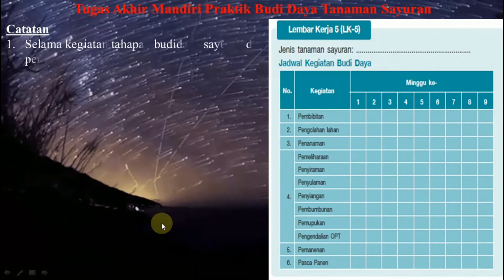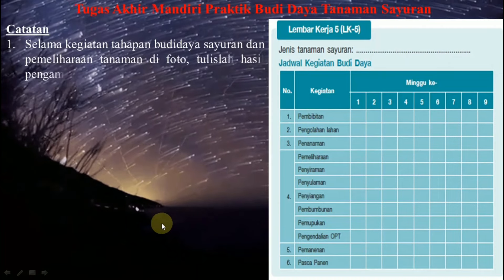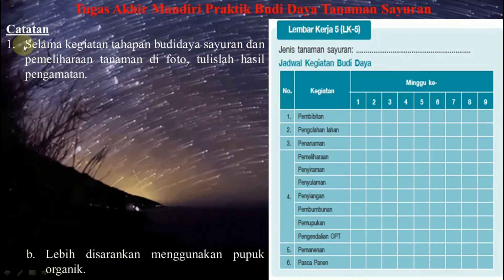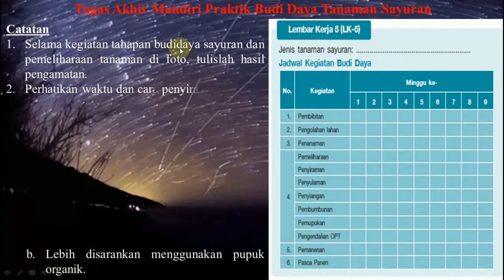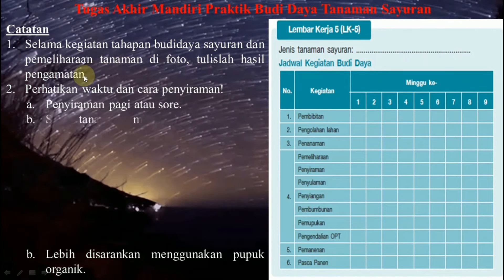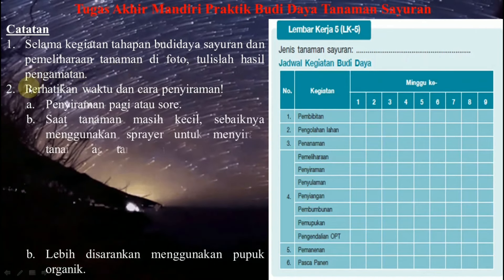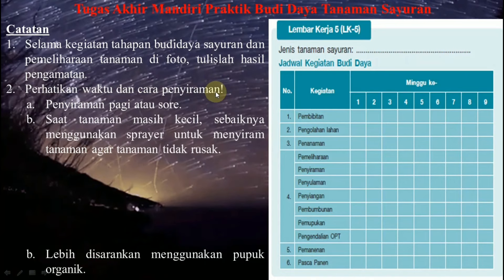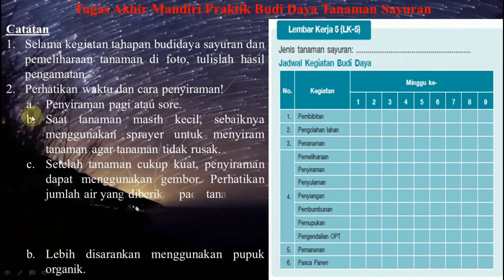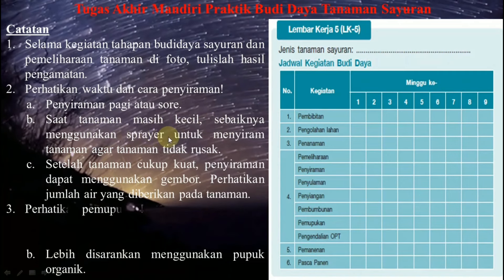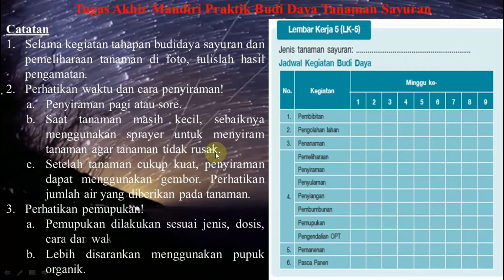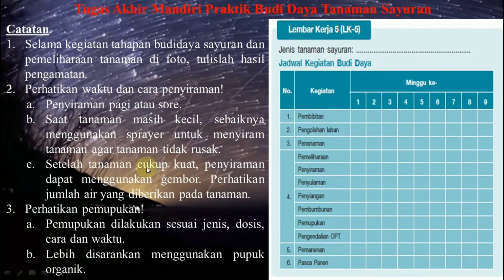Sebagai tugas akhir mandiri praktik budidaya tanaman sayuran: catatan pertama, selama kegiatan tahapan budidaya sayuran dan pemeliharaan tanaman, difoto dan tulislah hasil pengamatan. Kedua, perhatikan waktu dan cara penyiraman—penyiraman pagi atau sore. Saat tanaman masih kecil, sebaiknya menggunakan spray air untuk menyiram tanaman agar tanaman tidak rusak.